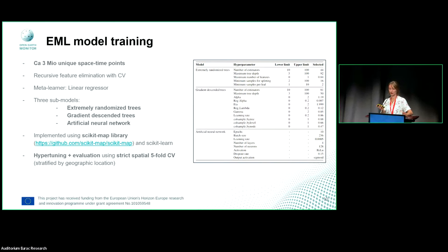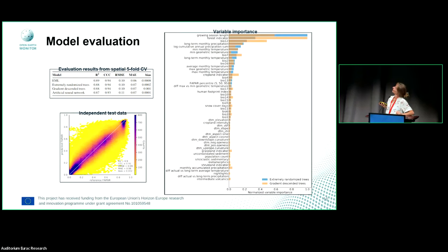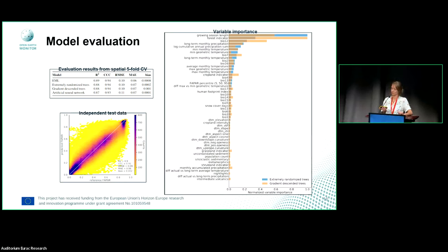We did the evaluation using five-fold spatial cross-validation, always ensuring that geographic locations are only either in the training or test dataset. We assessed the data against an independent test dataset and found an R-squared of about 0.9. The most important variables in the model were growing season length, the forest indicator map, and bioclim-12, which is annual precipitation.